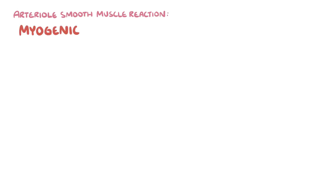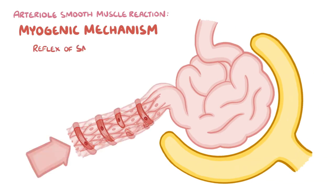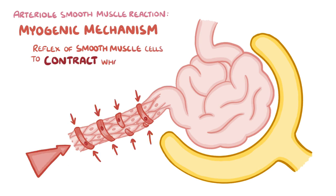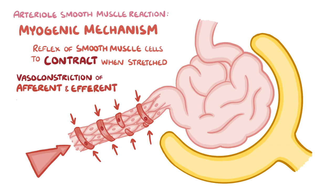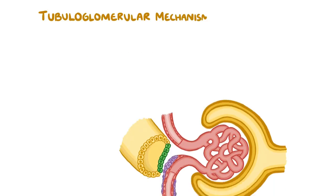There are two mechanisms of kidney autoregulation. First is the myogenic mechanism — an arterial smooth muscle reaction based on a reflex of smooth muscle cells to contract when they are stretched by blood coming in at high pressures. The more they get stretched, the more they contract, causing vasoconstriction of the afferent and efferent arterioles.